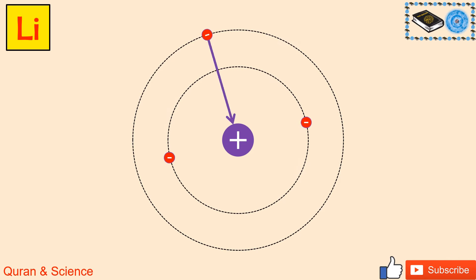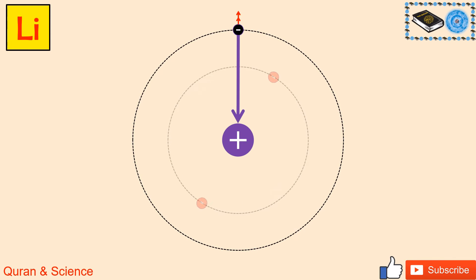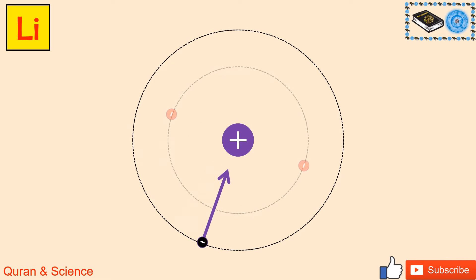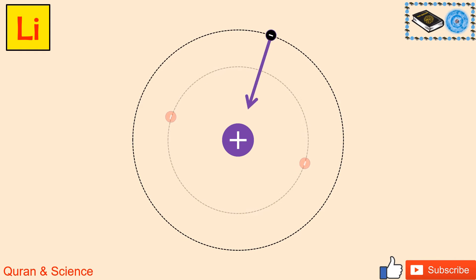The nucleus will attract the valence electron as shown by the purple arrow. The inner electrons will exert repulsive forces on the valence electron, as shown by the red arrows. These repulsive forces will reduce the nuclear charge to some extent, and the reduced nuclear charge is called effective nuclear charge. This is called effective because after the action of the repulsive forces the net reduced nuclear charge will remain effective on the valence electron. The actual nuclear charge has been shielded or reduced in this process, therefore it is called the shielding effect by the inner electrons. Hence in lithium the shielding effect occurs to some extent.